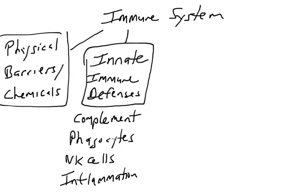When pathogens pass those barriers, they activate the innate immune defenses — the first line of defenses that activate fairly quickly. Things like complement, phagocytes including macrophages and neutrophils, natural killer cells, and the processes of inflammation. These will start to attack and clear the pathogen and stop it from reproducing, but they are not perfect defenses.